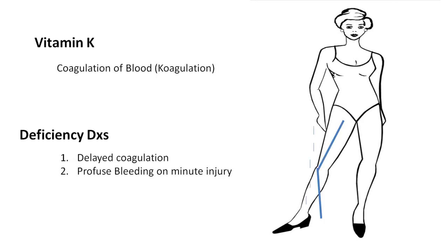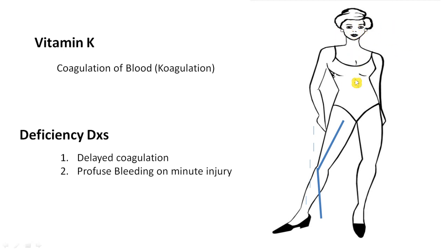Next is Vitamin K. Going further down to the knee — if you bend the knee it makes a shape like 'K,' and the knee is often injured while playing. Vitamin K helps in the coagulation of blood. Its deficiency causes delayed coagulation and profuse bleeding even on minor injury. This completes the non-B vitamins: A, C, D, E, and K.